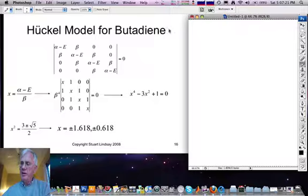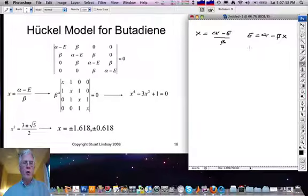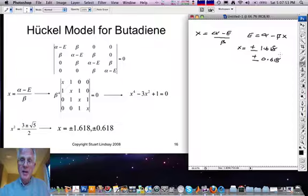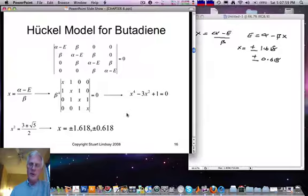Let's remind ourselves that X is alpha minus E over beta, and this results in E equals alpha minus beta X. Recall that there are these four values for X, plus or minus 1.618, and plus or minus 0.618 times beta. Also recall that beta is a negative number because it corresponds to the attractive interaction between a neighboring proton and an electron.